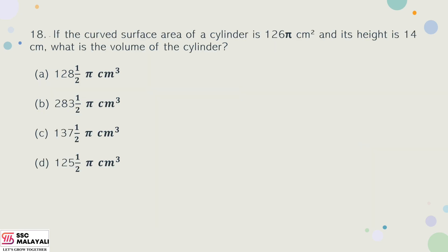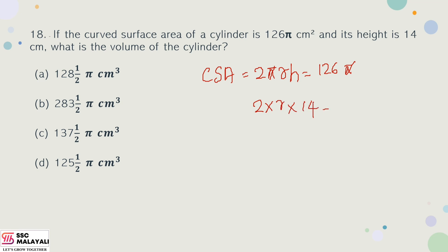Question number 17 (next): If the curved surface area of a cylinder is 126π. The curved surface area formula is base perimeter times height, i.e., 2πRH = 126π. Cancelling π, the height is equal to 14. The radius is 126 divided by (2 × 14).